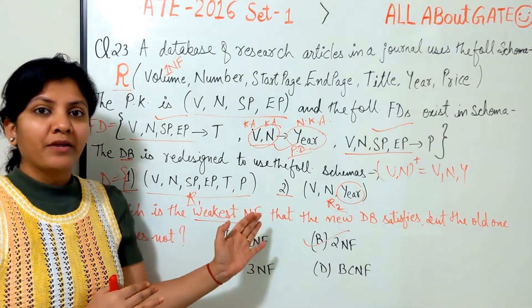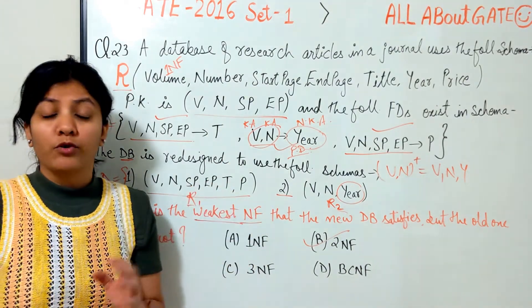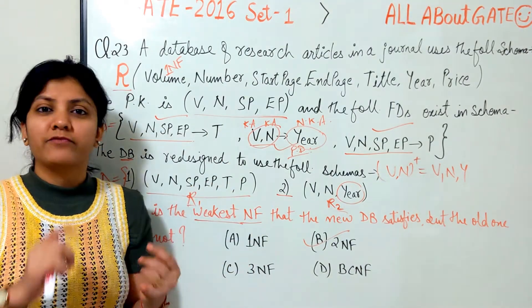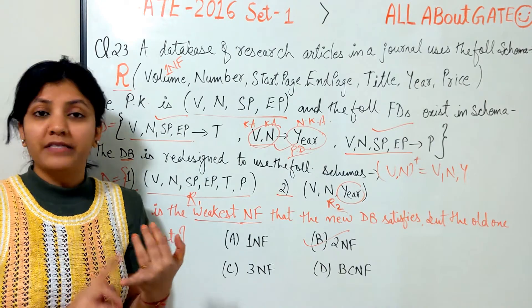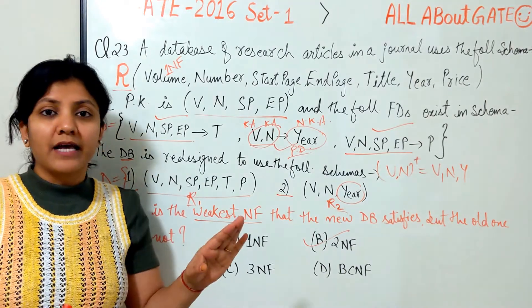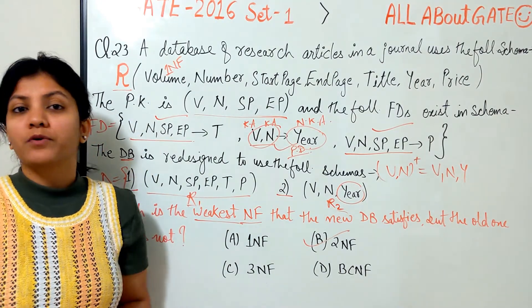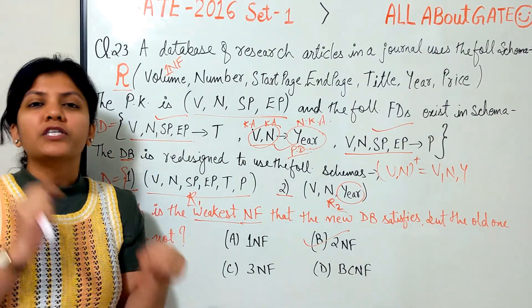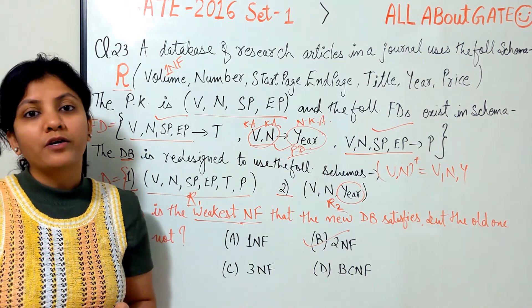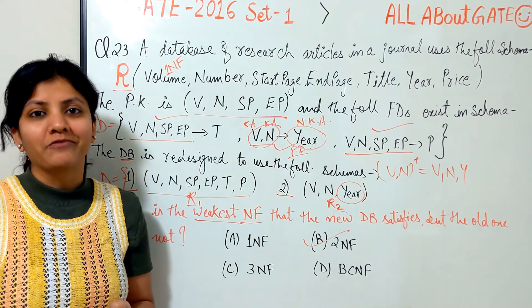The answer for this question is option B: 2NF. I hope this is clear. If you have any other questions — previous GATE questions, other exam questions, or questions from your exercise book — just post them in the comment section and I'll be glad to solve them for you.